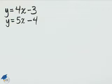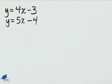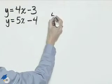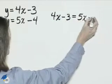In solving this system by substitution, we can set 4x minus 3 equal to 5x minus 4, because those are both equal to y. That will give us the equation 4x minus 3 equals 5x minus 4.